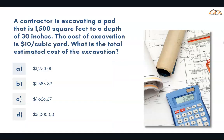A contractor is excavating a pad that is 1,500 square feet to a depth of 30 inches. The cost of excavation is $10 per cubic yard. What is the total estimated cost of the excavation? The correct answer is B, $1,388.89.